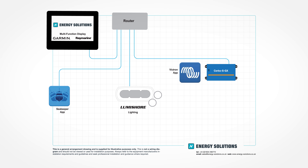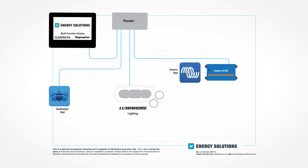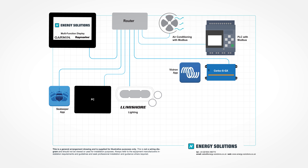This drawing shows the basic structure of a standard system with a multi-function display and some HTML5-enabled products, one of which is the Victron Cerbo. In a standard format, you'd access Seakeeper via the Seakeeper button, Lumishore from the Lumishore button, and Victron from the Victron button. But if we change this to a version with our mini PC running our software, we can now see the additional sources of data we can bring together. The drawing shows a couple of Modbus items: an air conditioning system with a Modbus TCP output, and a PLC controlling things like garage doors or a ship's alarm system.